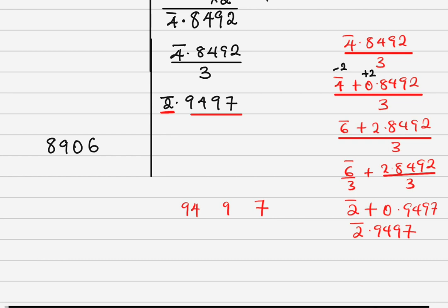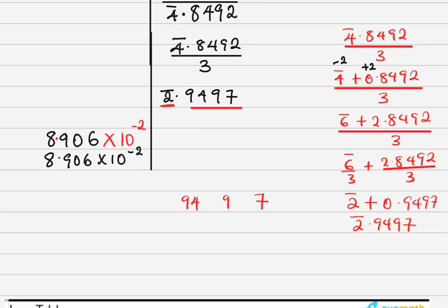Now using the characteristic bar 2: put the decimal point after the first number, then times 10 raised to power bar 2 (which is minus 2 in number environment). So the answer is 8.906 times 10 raised to power minus 2. In normal form (not standard form), this is 0.08906. That is your final answer.